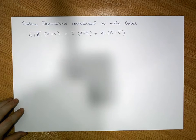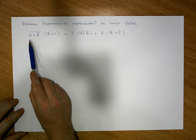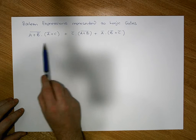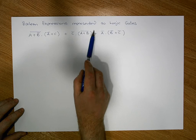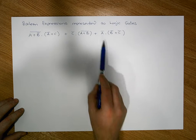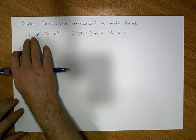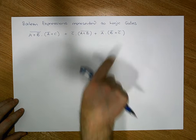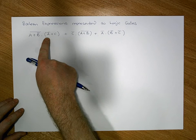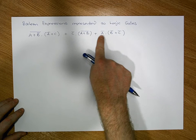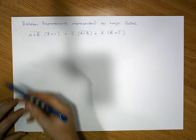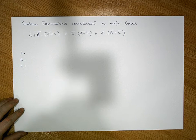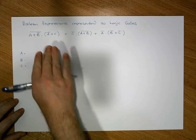This particular example deals with a specific boolean expression that has three key terms. Before we get started, we're going to walk from left to right and identify how many unique inputs there are. As we can see, we have an A, a B, and a C, so there are three inputs: A, B, and C.